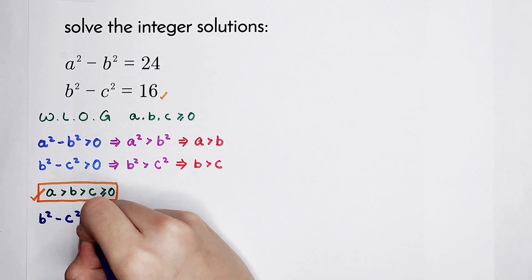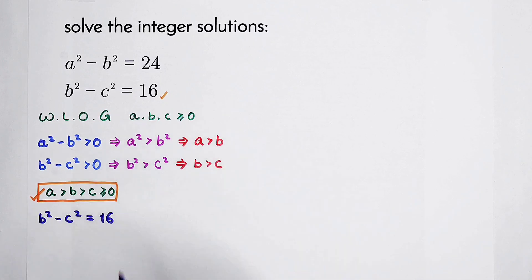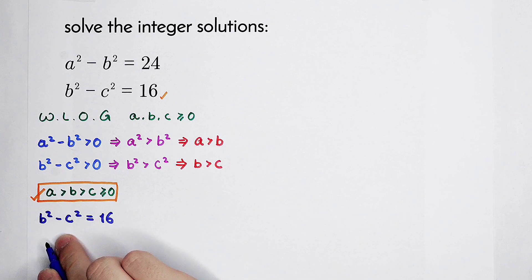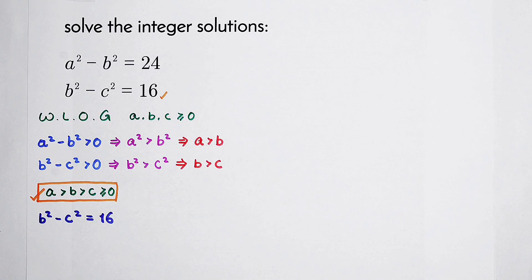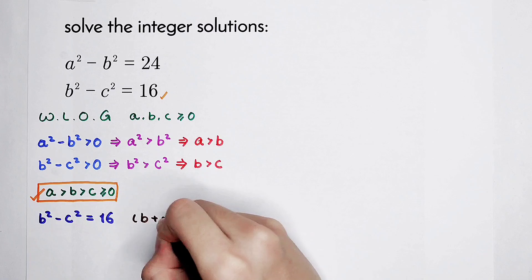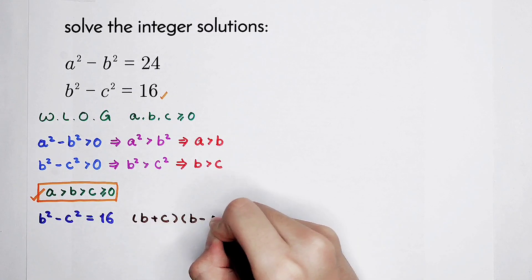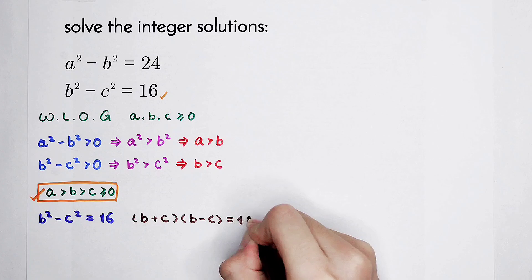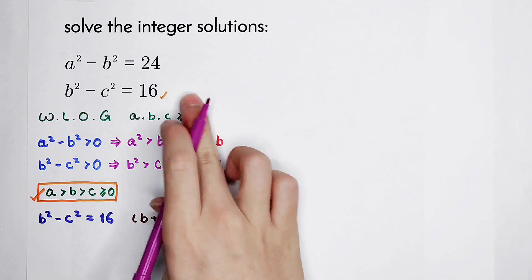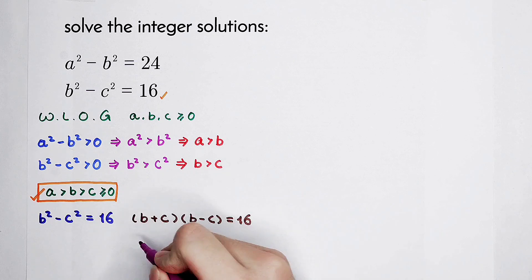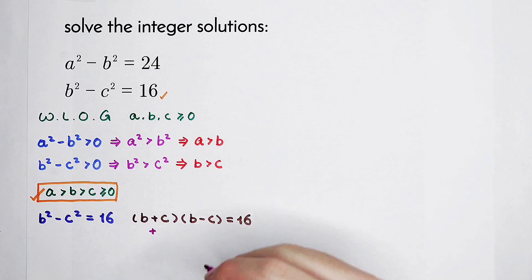So now, b squared minus c squared equals 16. Using the binomial formula, x squared minus y squared equals x plus y times x minus y. So here we have b plus c times b minus c equals 16. Since b and c are both non-negative integers, b plus c is positive, and b minus c should also be positive.